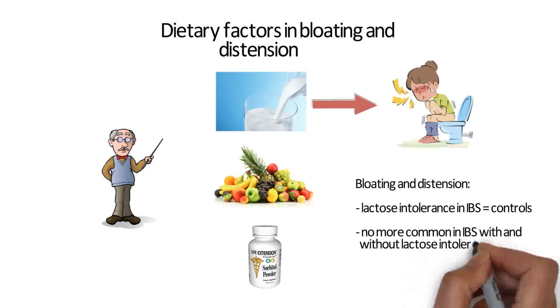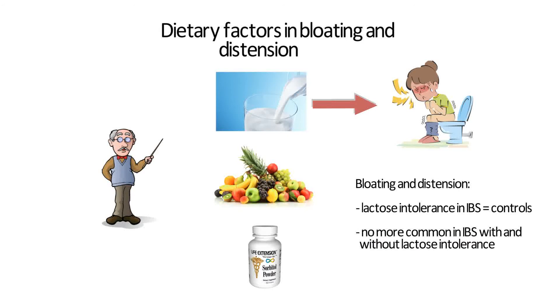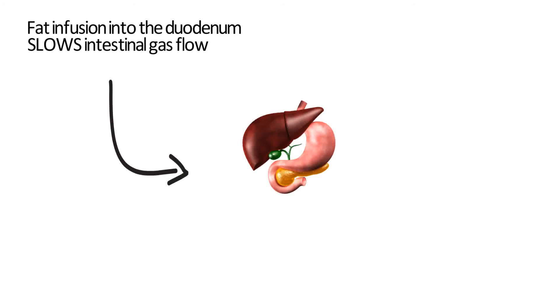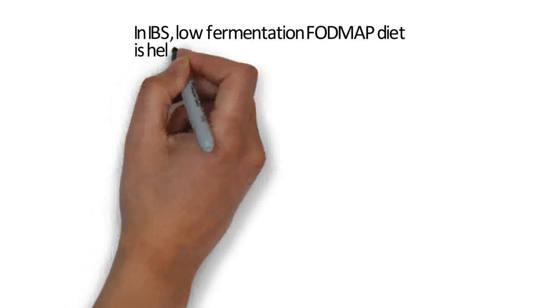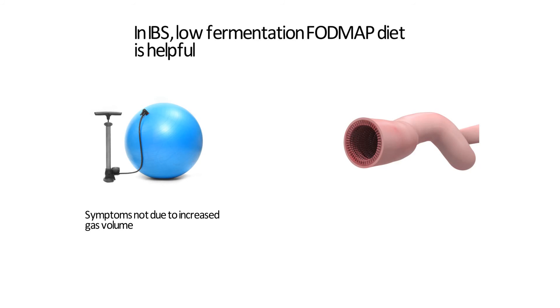Returning to our subject, there is little evidence that food sensitivity is the primary cause of bloating and distension, although there is evidence that dietary factors play a permissive role. Experimentally, fat infusion into the duodenum slows intestinal gas flow, and there is also evidence that in IBS, low-fermentation diets such as the FODMAP diet are helpful. Bearing in mind that the symptoms are not caused by increased intestinal gas volume, the effect of low-fermentation diets is likely to relate to changing pressure on the gut wall, rather than a simple volume effect. But more about that when we discuss treatment.